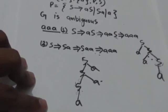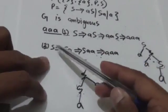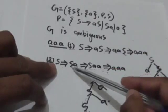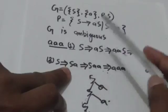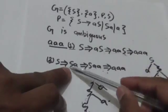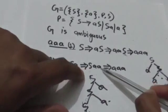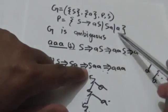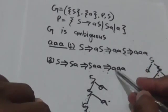Now there is another leftmost derivation for this string A A A. It starts from S. Here I have applied the production rule S derives SA, so S is replaced by SA. Now this S is the leftmost variable, and again I apply S derives SA, so this S is replaced by SA. This is another leftmost derivation of the string A A A.